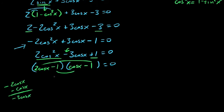Now that we have this factored, we could say either the first factor, 2cosx - 1 = 0, or cosx - 1 = 0. Solving these, we might as well go ahead and solve them.